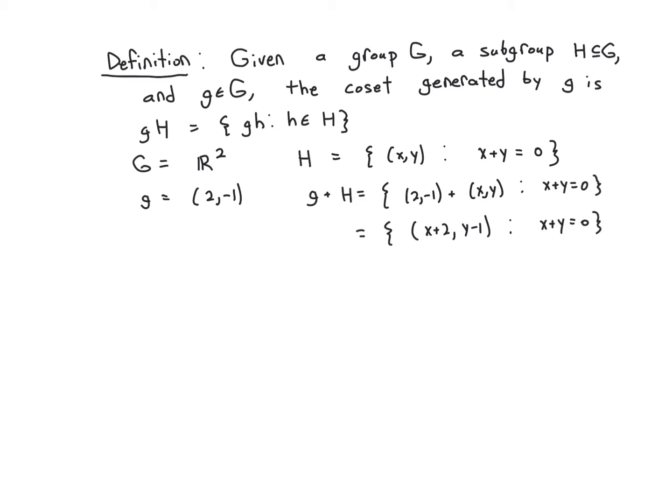Let's go with an example you might be familiar with from linear algebra. Let's take G to be the vector space R squared. H is the set of ordered pairs x, y such that x plus y equals zero, so this is a linear subspace coming from the equation y equals negative x. So we know from linear algebra that that is a subspace, means it is actually a subgroup with respect to addition, so the group operation here is addition.